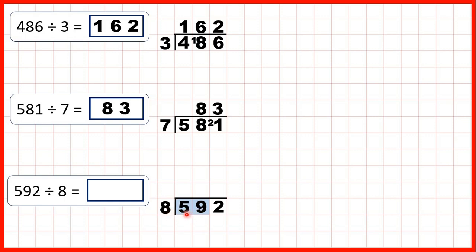We need to think of a number in the 8 times table that's as close to 59 as possible but not more than 59. The closest number in the 8 times table is 56, and because that's 7 times 8 we write 7 in our answer line. 7 times 8 is 56 and we need 3 more to get to 59, so 3 is our remainder. Let's check: 7 times 8 is 56, plus 3 is 59.